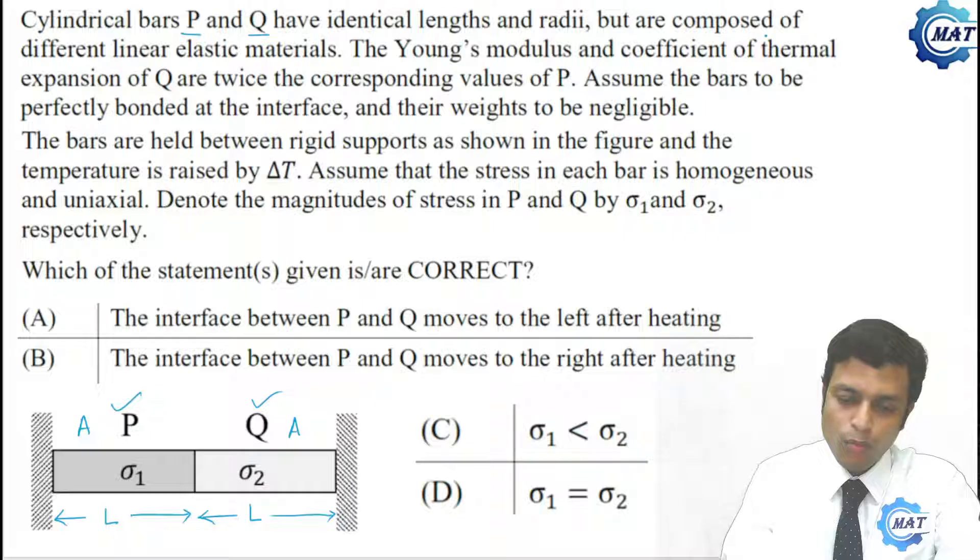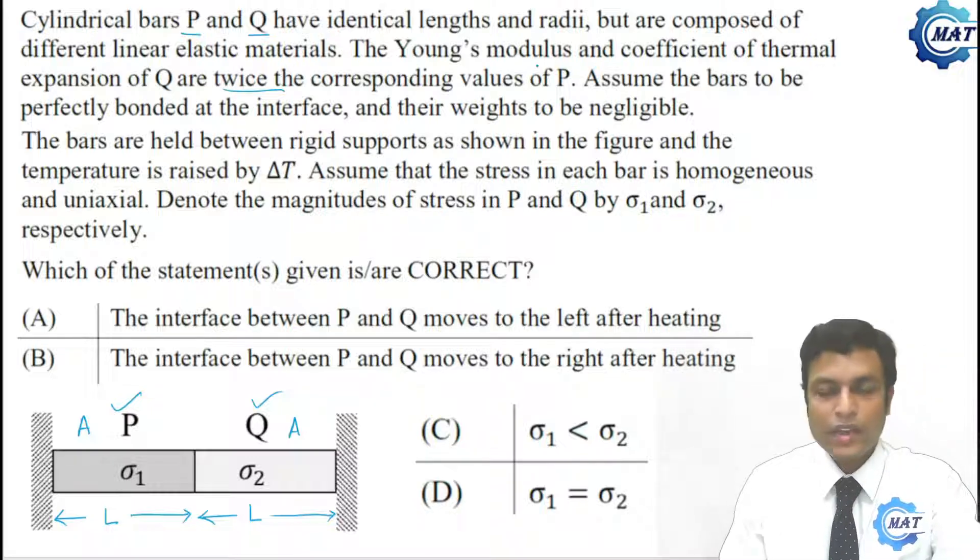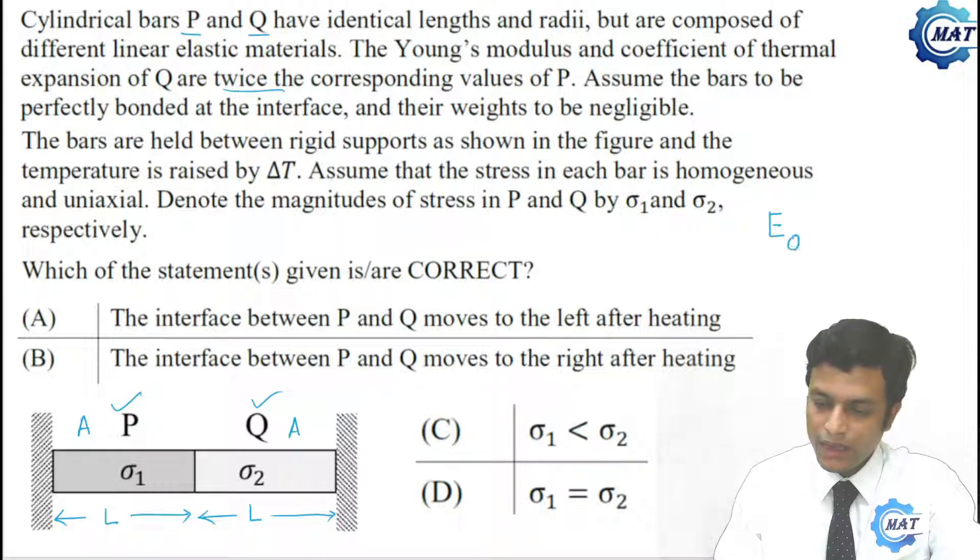But are composed of different linear elastic materials. P and Q are of different linear elastic materials. The Young's modulus and coefficient of thermal expansion of Q are twice the corresponding value of P. That is, EQ is twice of EP, and alphaQ is twice of alphaP.